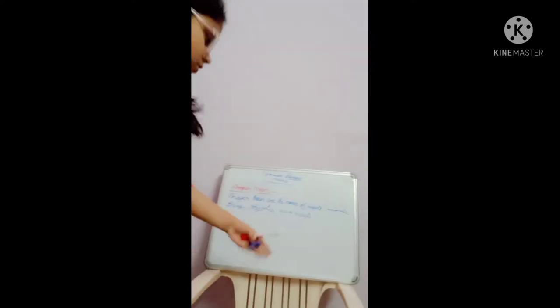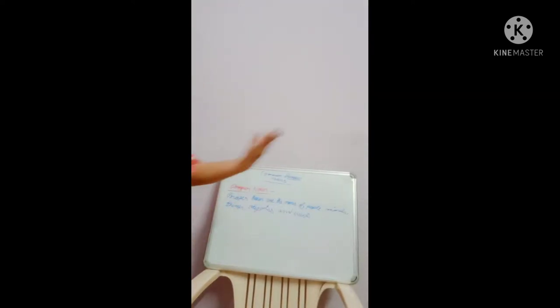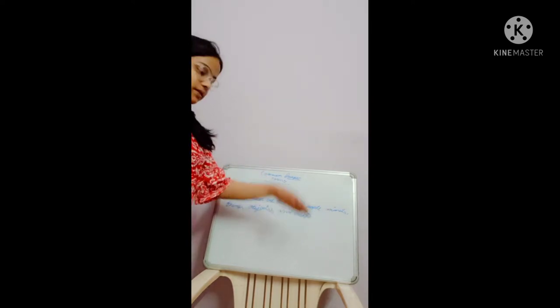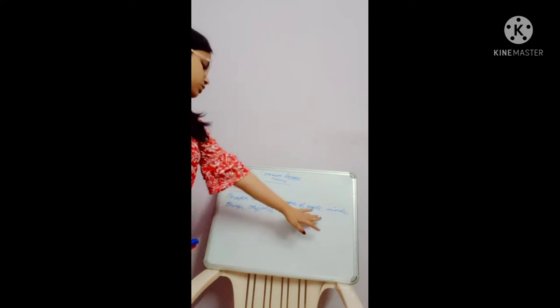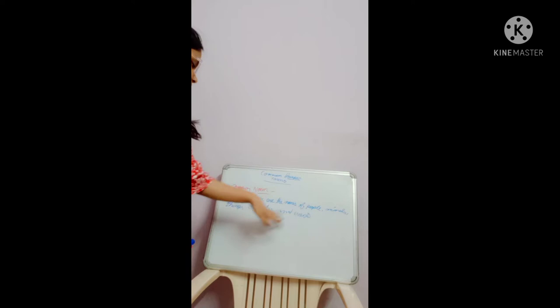So proper nouns are the names of people, place, animals, things and events. Means they are the special names of people, place, animals, things.